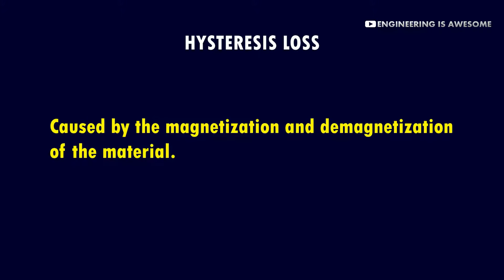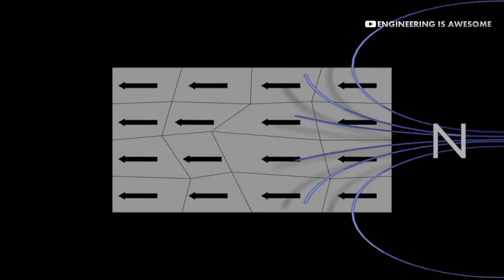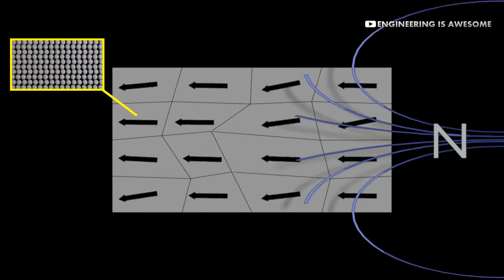Hysteresis loss usually happens in ferromagnetic materials when they are magnetized and demagnetized. This is because the atoms in a ferromagnetic material combine in groups to form regions called magnetic domains. These magnetic domains are like tiny magnets because they have their own polarity and are affected by any external magnetic field. Now, if we apply an external magnetic field, the domains will align with the magnetic field. This happens because the atoms in each domain rearrange themselves so that the domain can align with the magnetic field.